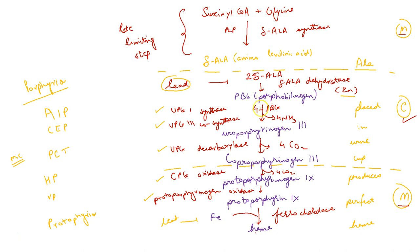Four molecules of porphobilinogen condense to form uroporphyrinogen 3 with the help of two enzymes: uroporphyrinogen 1 synthase and uroporphyrinogen 3 cosynthase. This is then converted to coproporphyrinogen 3 by a decarboxylation reaction. Another reaction converts coproporphyrinogen 3 to protoporphyrinogen 9 — now the cycle enters the mitochondria. Protoporphyrinogen 9 is then converted to protoporphyrin 9, which incorporates iron to form heme with the help of ferrochelatase.